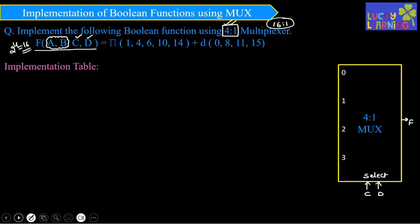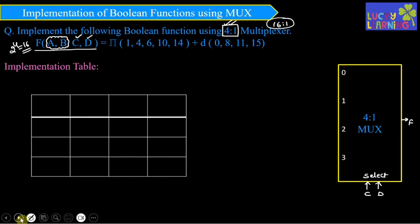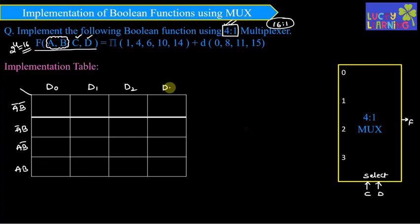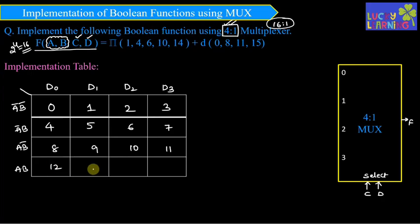Since we are implementing using a 4-to-1 multiplexer, we use a 4×4 implementation table. Each row represents a bit combination of A and B: the first row is A'B' (00), the second is A'B (01), the third is AB' (10), and the fourth is AB (11). The columns represent data inputs D0, D1, D2, and D3, corresponding to min terms 0 through 15.